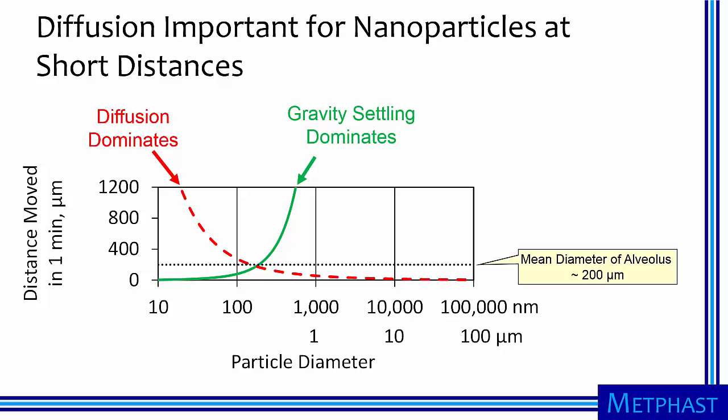To put things in further perspective, we need to change the scale of things that we are considering. So here, for this plot, on the y-axis I show the distance the particle is displaced in one minute, but instead of showing this data in meters, I show it in micrometers. The x-axis is particle diameter that we are familiar with. For perspective, I add that the mean diameter of a human alveolus is 200 micrometers.